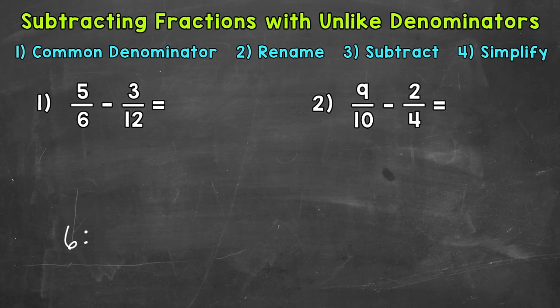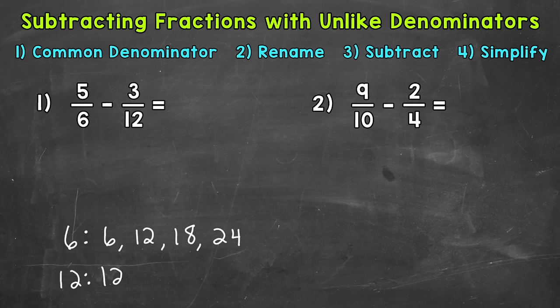The first 4 multiples of 6 are 6, 12, 18, 24. Now for 12, the first multiple is 12. No need to go on if you find the least common multiple — we have a least common multiple of 12. So we are ready to move to the next step, which is rename. 12 is going to be our common denominator.